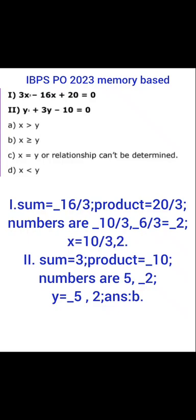We find two numbers whose sum is 3 and product is -10. That gives us 5 and -2, since 5 × (-2) = -10 and 5 + (-2) = 3. Therefore y's values are the opposite signs: y = -5 and y = 2.